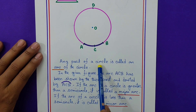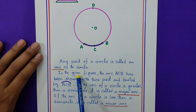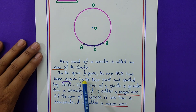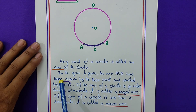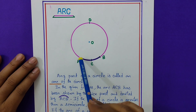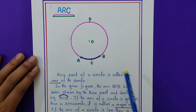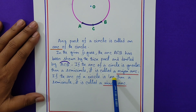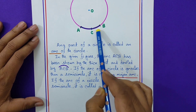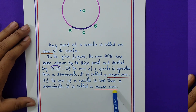Page number 9: arc. Any part of a circle is called an arc of the circle. The arc ACB has been shown by the thick part and is denoted by the arc symbol ACB. If the arc of a circle is greater than a semicircle, it is called a major arc — here ADB is the major arc. If the arc is less than a semicircle, it is called a minor arc — here ACB is the minor arc.